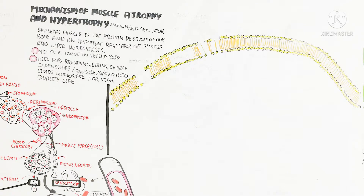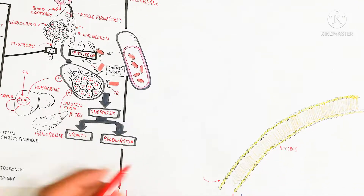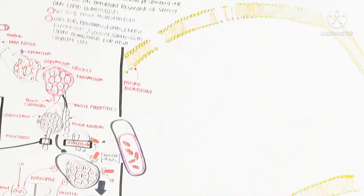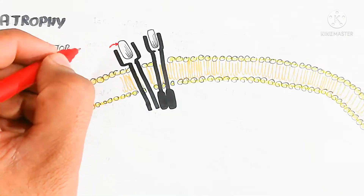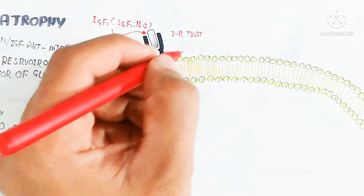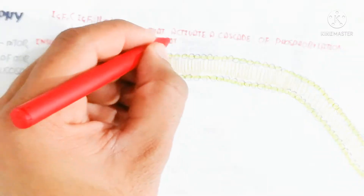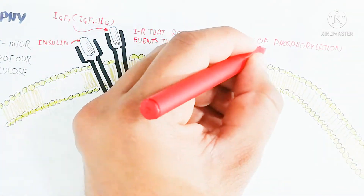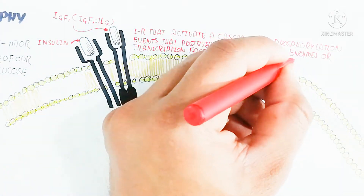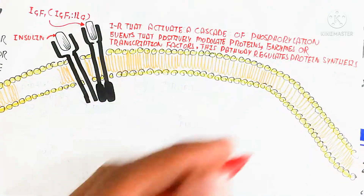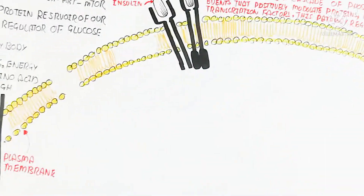Let's begin to understand the molecular pathway. Here is a bigger picture of the cell containing the plasma membrane, which is a bilayer of phospholipid. The nucleus also has a bilayer of phospholipid — the nuclear membrane. Inside the nucleus is DNA in the form of chromosomes, with many genes that need to be activated through transcription factors. There are two types of tyrosine kinase receptors: insulin receptor and insulin-like growth factor 1 receptor. The insulin receptor activates a cascade of phosphorylation events that positively modulate proteins, enzymes, or transcription factors — this pathway regulates protein synthesis, degradation, or cell proliferation.